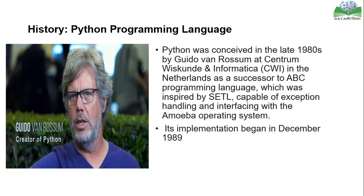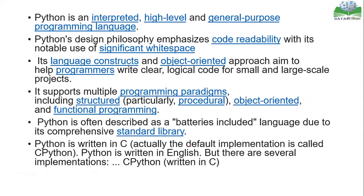Let's look at the history of Python. Guido van Rossum was the person who invented Python in 1991, starting from the late 1980s. It started with Python 2, which ran for many years and was then transformed to Python version 3 in 2008 with some major updates. We will also see the differences between Python 2 and Python 3 later.